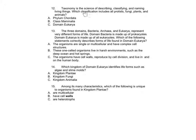Number 12: Taxonomy is the science of describing, classifying, and naming living things. Which classification includes all protists, fungi, plants, and animals? A: Phylum Chordata, B: Class Mammalia, C: Domain Eukarya.